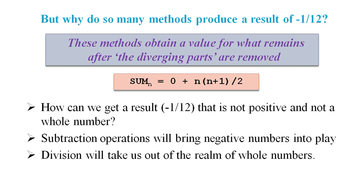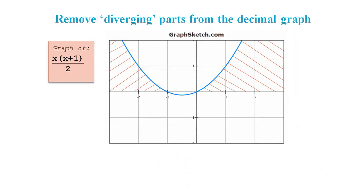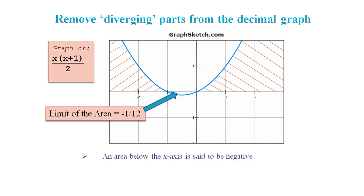Now let's see what this means in terms of a graph. Here is a graph of our partial sum function. The graph is plotted for decimals, not whole numbers, and includes negative numbers. Removing the diverging parts in this case means removing the shaded in parts. Our mysterious value of -1/12 is the limit of the area that remains beneath the x-axis.